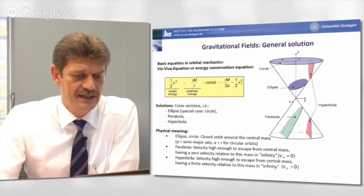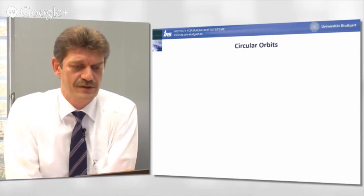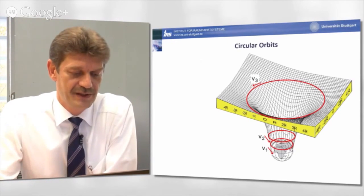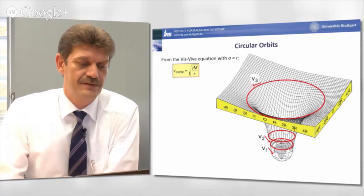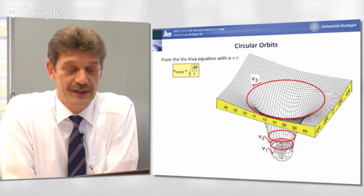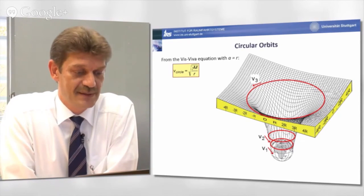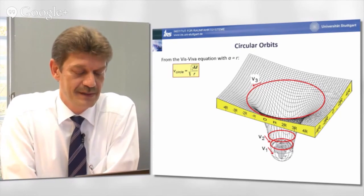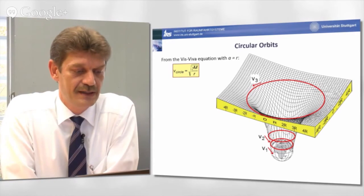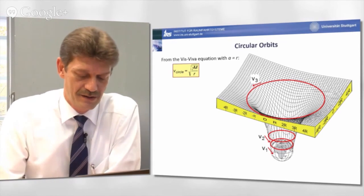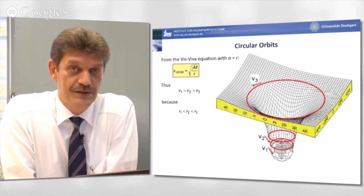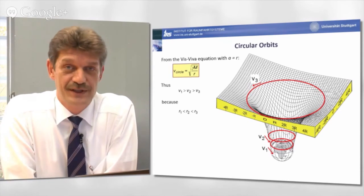So, with this equation we can easily calculate the velocities needed, for example, for circular orbit, as sketched here. The equation simplifies for circular velocities nothing else than the square root of the product gamma, the universal gravitational constant times the mass of the central body divided by the distance r of the circular orbit. So, we can easily see from this equation that the closer you are to the central mass, the higher the velocity must be.